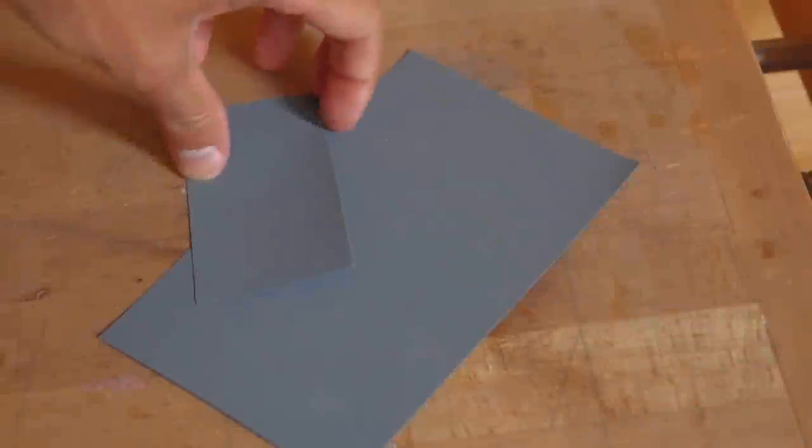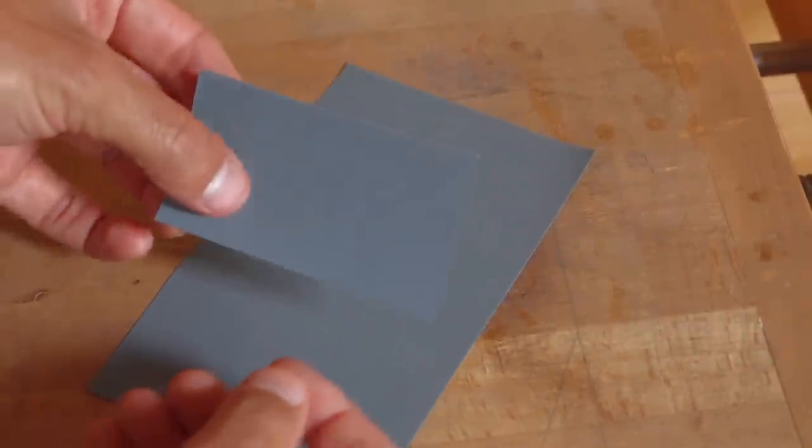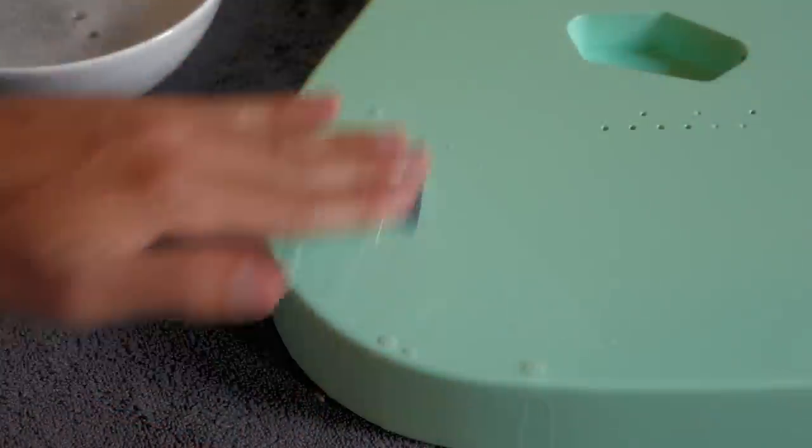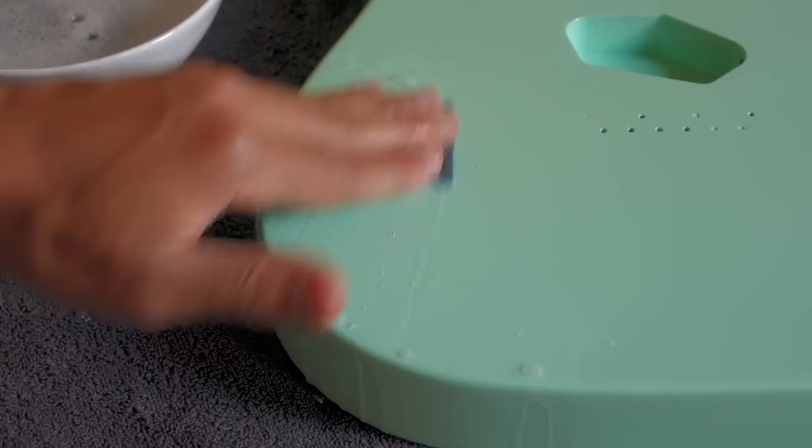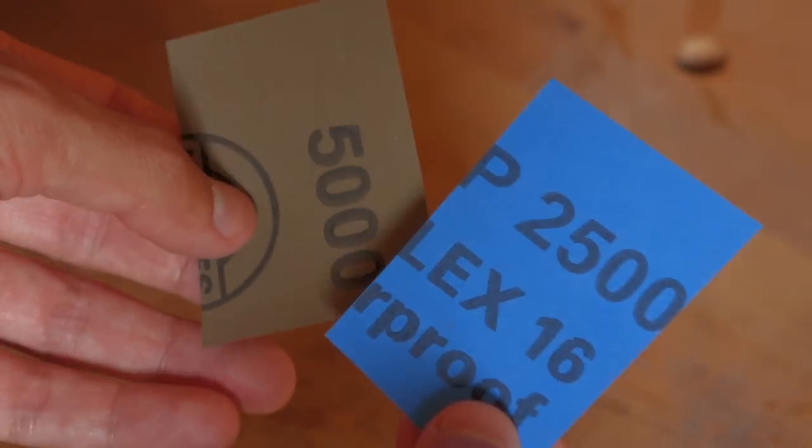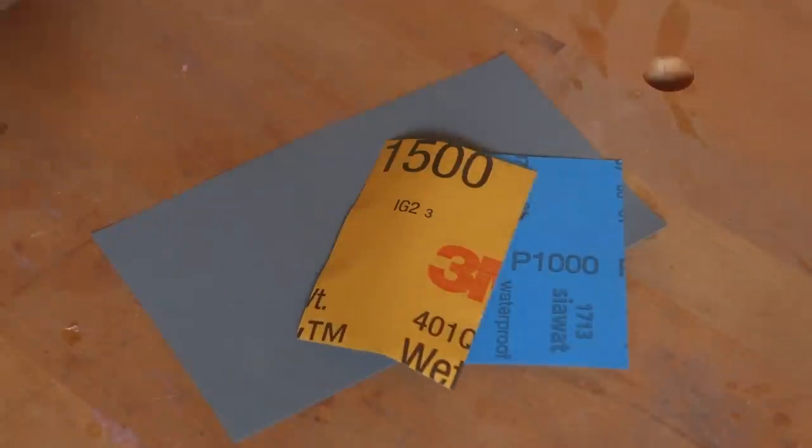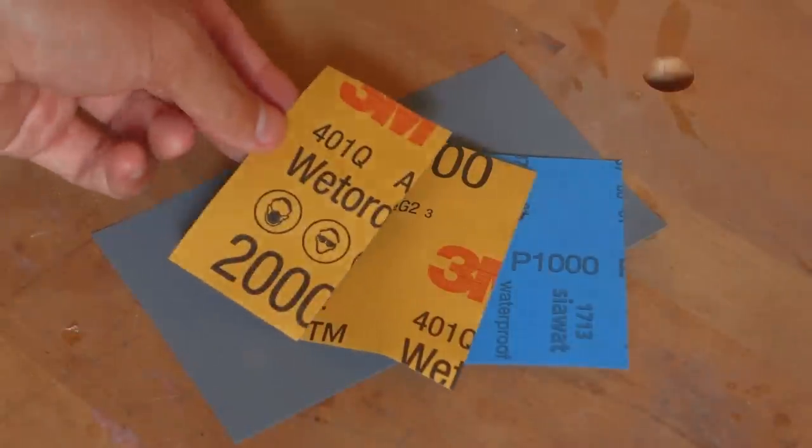As I just mentioned I like to start the sanding process with 1000 grit sandpaper. I use it primarily to flatten out the finish. So as soon as it's flat I'll stop and move on to a finer grit. From that moment on the goal is simply to remove the scratch marks left by the previous grit. I personally like to progress from 1000 to 1500 to 2000 grit. After that I'll start polishing.